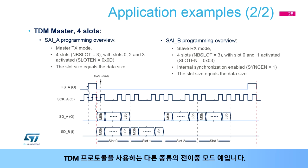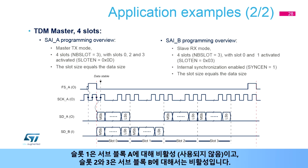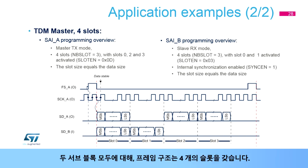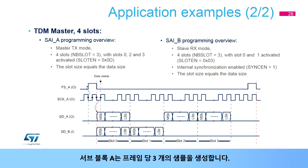Another kind of full-duplex mode uses the TDM protocol. Slot 1 is inactive or not used for sub-block A. Slots 2 and 3 are inactive for sub-block B. For both sub-blocks, the frame structure has four slots. Sub-block A will generate three samples per frame, while sub-block B will receive two samples per frame.